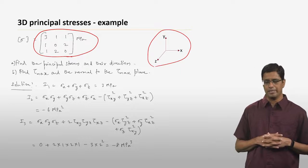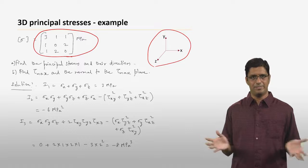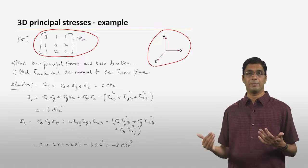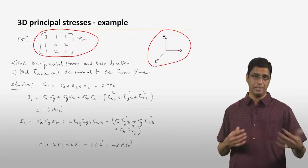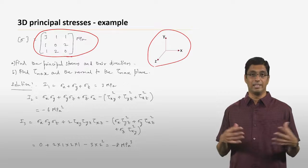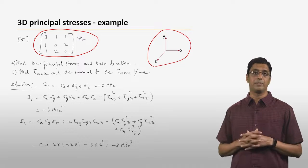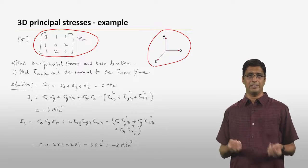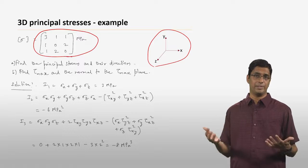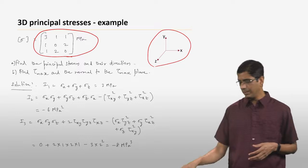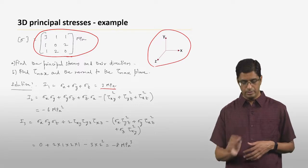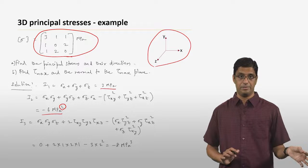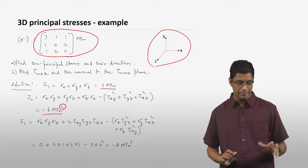When you are asked to find principal stresses in 3D, the first thing you have to do is calculate the invariants: i1, i2, and i3. Just to remind you, i1 is sigma_x plus sigma_y plus sigma_z, and i2 is sigma_x sigma_y and so on. These expressions were given in the last class. Once you are given the stress matrix, it's a question of substituting the values of sigma_x, sigma_y, sigma_z, tau_xy, tau_yz, and tau_xz into these expressions. In this particular case, i1 is 3 MPa, i2 is minus 6 MPa squared — pay attention to the units because it is a product of two stresses.